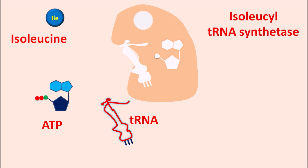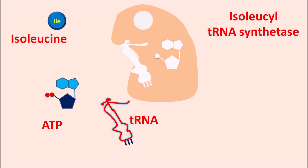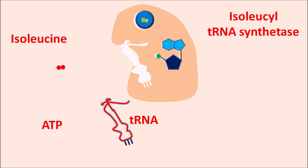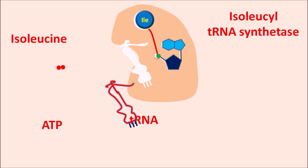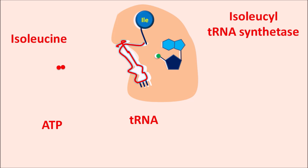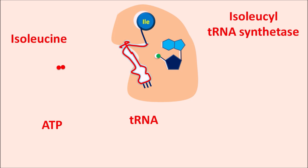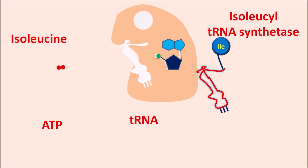In the presence of ATP, isoleucine binds to the isoleucyl-tRNA synthetase enzyme. During this binding, hydrolysis of ATP takes place, releasing the diphosphate bond and producing AMP (adenosine monophosphate) along with the release of energy. This energy is utilized for binding of isoleucine with AMP. Next, tRNA binds to the enzyme, forming a bond with isoleucine, while the bond between AMP and isoleucine is removed. The resulting tRNA attached to the amino acid is called aminoacyl-tRNA.